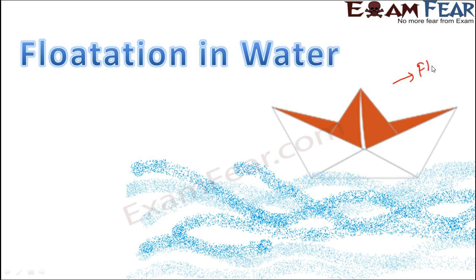If they remain on the surface, the object is floating. Think of a paper boat on water — when you put a paper boat on running water, the boat always remains on the surface and keeps moving with the water, so we say it is floating. Whereas if you throw a stone into water, it doesn't float — it goes inside and sinks. So insoluble substances either sink or float.